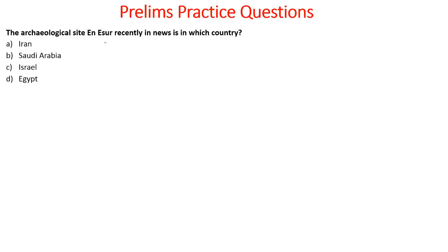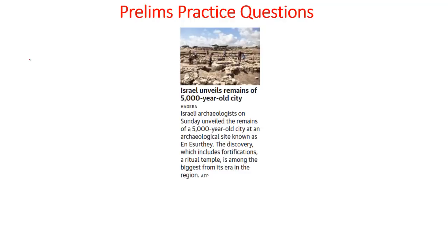The archaeological site in Assur recently seen in news is in which country? The answer is Israel — Israeli archaeologists unveiled the remains of a 5,000-year-old city at an archaeological site called En-Esur. Kindly remember this particular name.